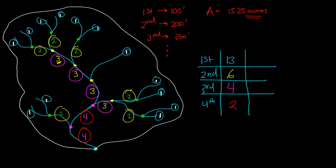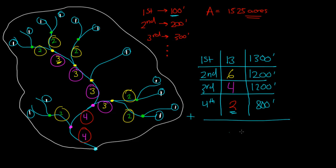With 13 first-order streams at 100 feet each, the total length for first-order streams is 13 × 100 = 1,300 feet. All second-order streams are 200 feet and we have 6 of them, so total second-order length is 1,200 feet. For third order, we have 4 streams at 300 feet each: 4 × 300 = 1,200 feet. For fourth-order streams, we have 2 streams at 400 feet each, giving a total of 800 feet. So our LT — total stream length — is 4,500 feet.